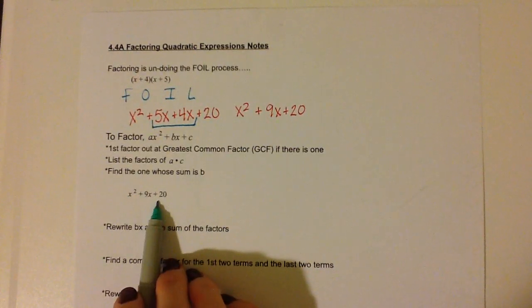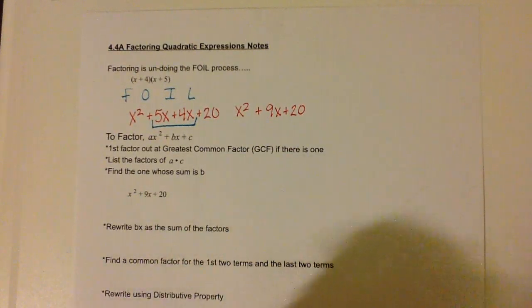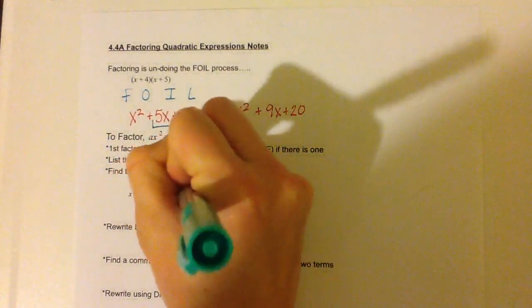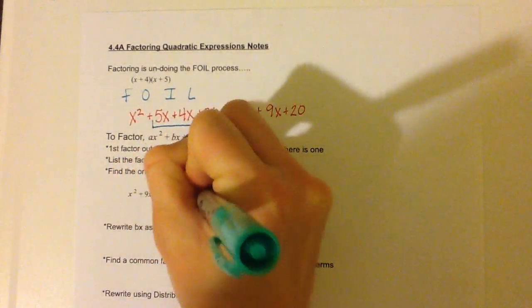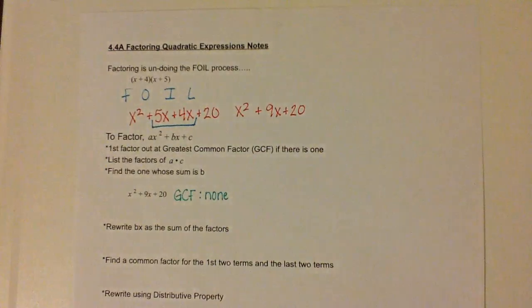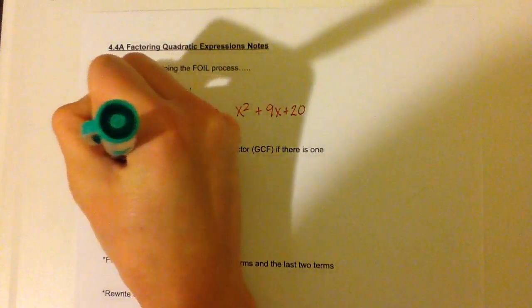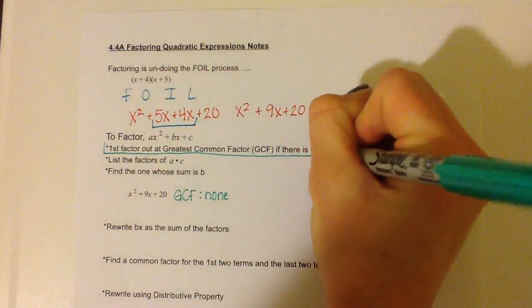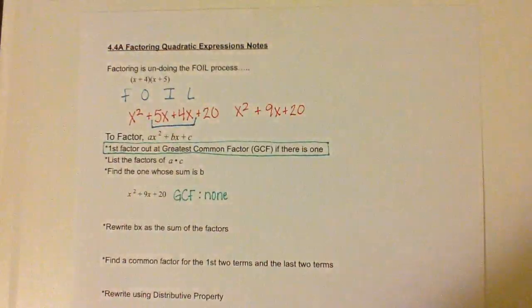No, there is not. The greatest common factor would be 1, so there is none. That is our first step — we are going to look for the greatest common factor, and if there is one, we are going to factor it out.